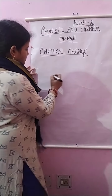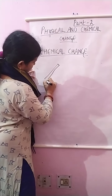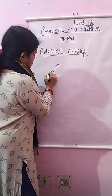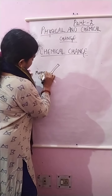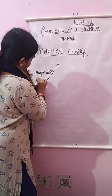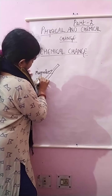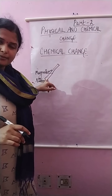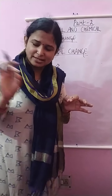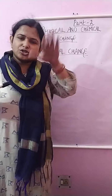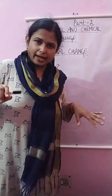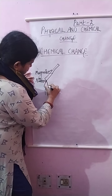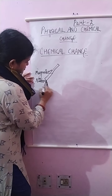Next activity: if you take a magnesium ribbon — it's there in the lab, it's like a rectangular shape. What we do is, first we will clean the magnesium ribbon with the help of sandpaper, and then we will burn it on one side.